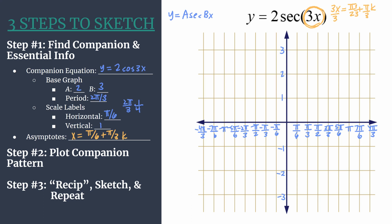Now let's go into step 2. We're going to plot our companion pattern, so we're essentially graphing y equals 2 cosine 3x. If you aren't familiar with graphing cosine equations, I'll put a link in the video description. It makes this just a lot easier.